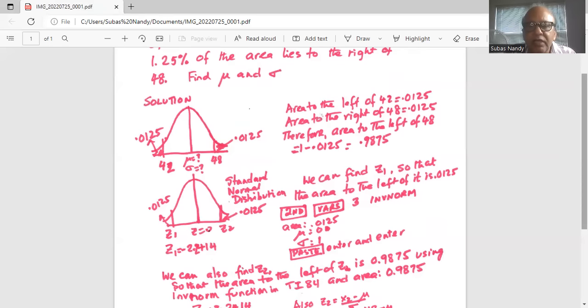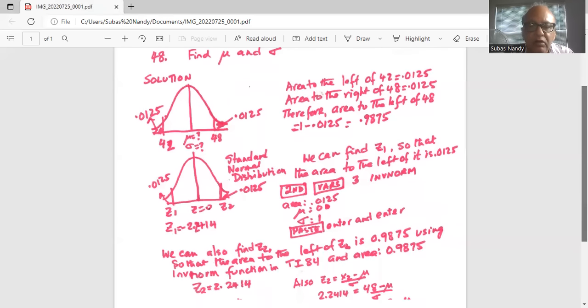Now area to the left of Z2, as I mentioned, is 0.9875. We use that information and substitute it in the invNorm function. So second, VARS, 3 which is invNorm.